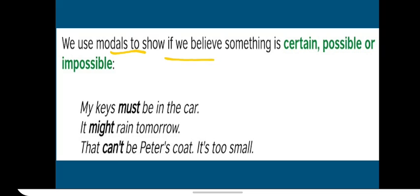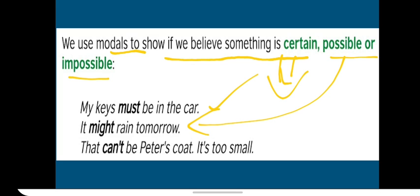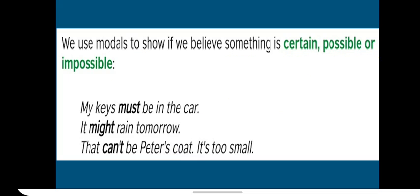So we use modals to show if we believe something is certain, possible, or impossible. When you believe that something is sure to happen, something is certain, or something is impossible to happen, we can use modals there. For example: my keys must be in the car. I'm certain the keys are there. It might rain tomorrow, showing possibility. That can't be Peter's coat, it is too small. It is impossible to be Peter's because the coat is too small for him.